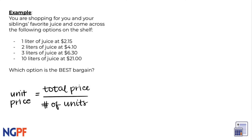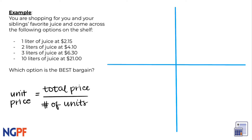Let's put our formula on the side here to reference: unit price equals total price divided by number of units. Then, since we have four different options, we can break up our workspace into four sections.